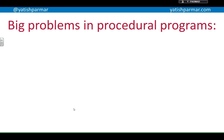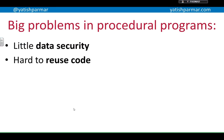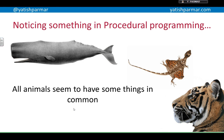Looking back at procedural programs, there were a couple of big errors that were picked up from that. First of all, there's little data security — in a big procedural program, you might not be using local variables, you have global variables, and you might have your data structures in different places, but it's very easy for parts of your program to look at the data in other parts. Also, it's hard to reuse code. So while people were creating procedural programs, they started to notice things.